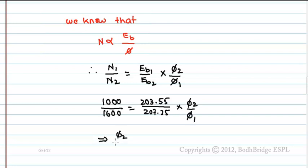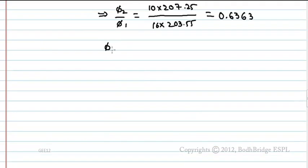From this, Phi2 by Phi1 equals 10 into 207.25 divided by 16 into 203.55. This equals 0.6363. Therefore, Phi2 equals 0.6363 into Phi1.